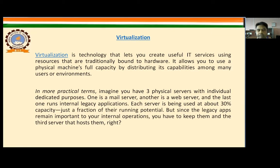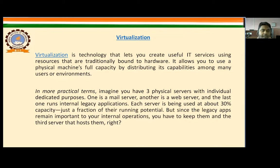So we have three physical servers — one for the mail server, another for the web server, and the third one for the legacy applications. Each server uses about 30% of its capacity, which is just a fraction of their running potential.